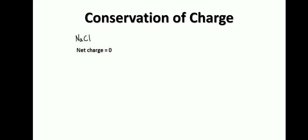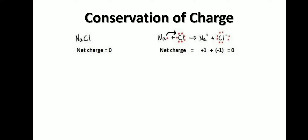Let's discuss the conservation of charge — how these charges are conserved. Let's take an example of NaCl. The net charge on NaCl is zero. When we see the formation of NaCl, the sodium atom provides one electron to the chlorine atom. The sodium atom gets one unit of positive charge, while the chlorine atom gets one unit of negative charge. The net charge is +1 + (−1) = 0.